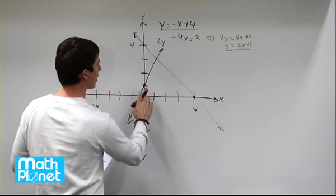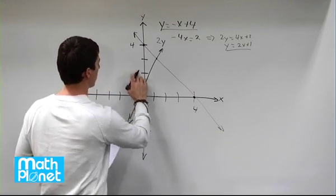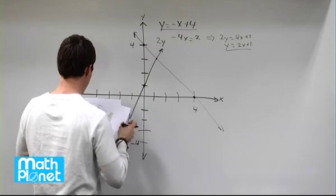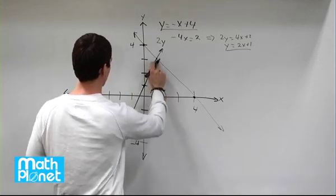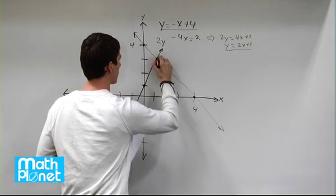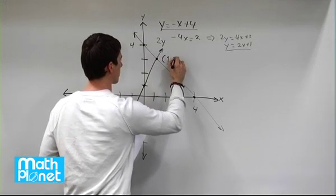So we have y-intercept of 1, slope of 2, 1, 2, and then over 1. And it looks to be like it's right about at 1, 2, 3. So this point is our solution, 1, 3.